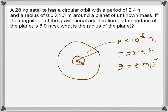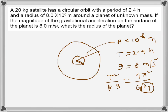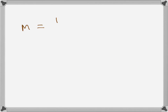First, we use Kepler's law: T² / R³ = 4π² / (G·M), where G is the gravitational constant. The only unknown is uppercase M, the mass of the planet. Rearranging, M = R³ / T² × 4π² / G.